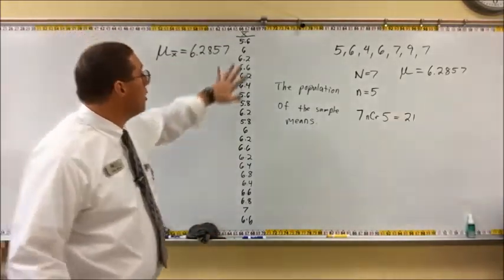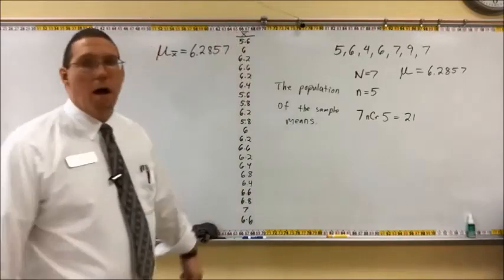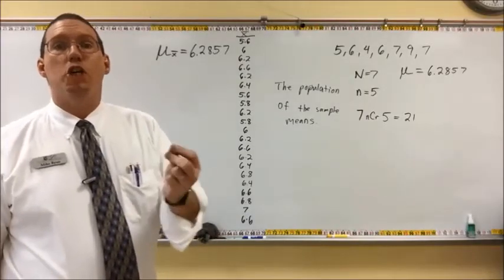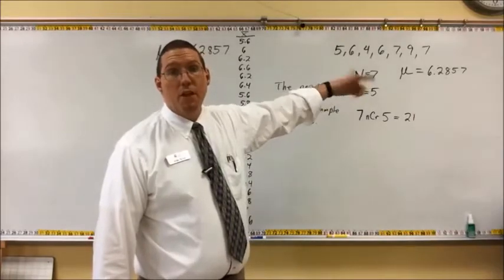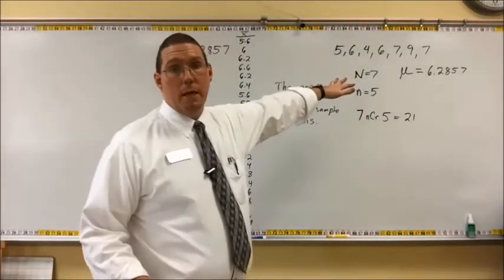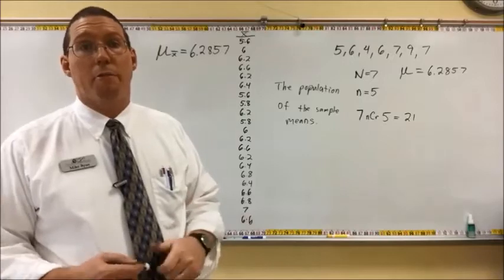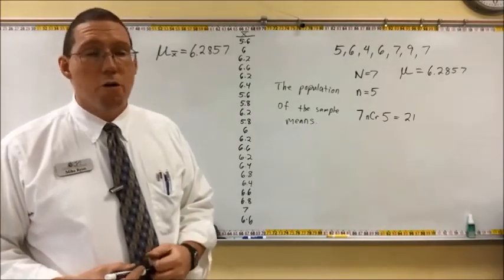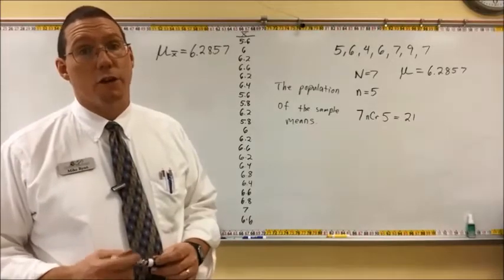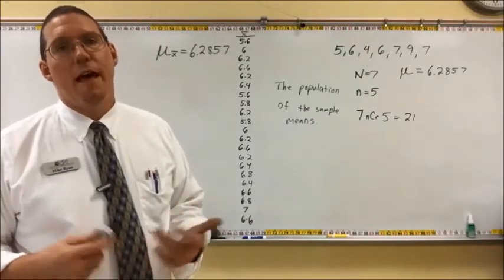It's important to understand because usually we have way too many possible samples to actually be able to identify the mean of the population of the sample means. So if somehow or another you can get a good approximation of the population mean, you can use that instead. Often what we typically do is come up with a sample mean and use it as a surrogate measure for the population mean. It's still doable depending on how you gather the data and how you use it.